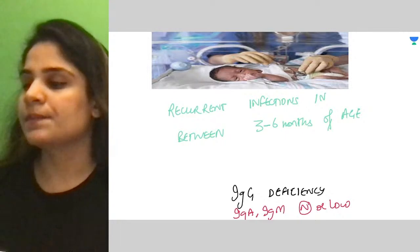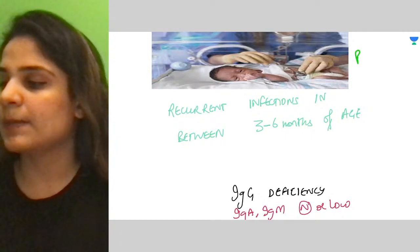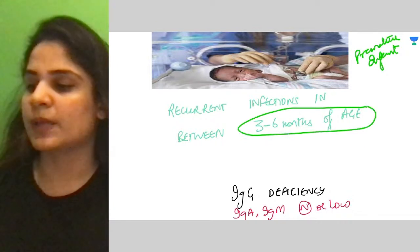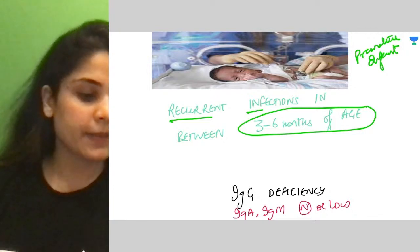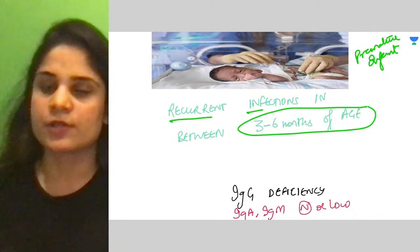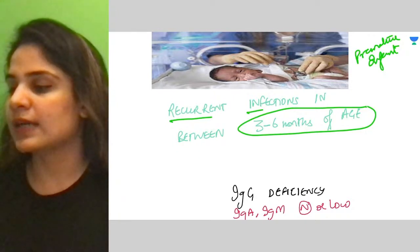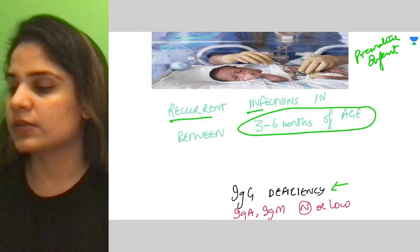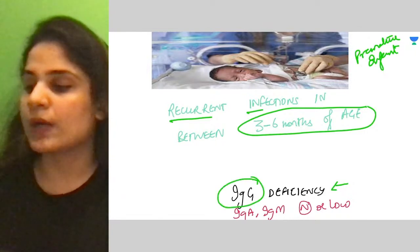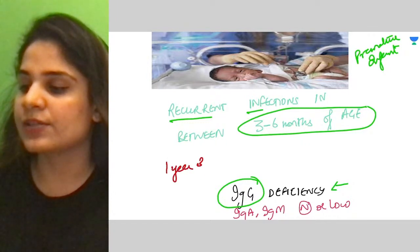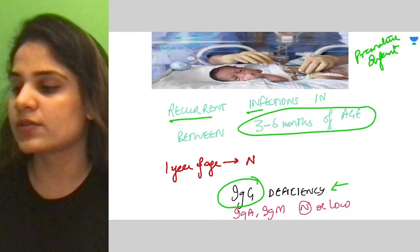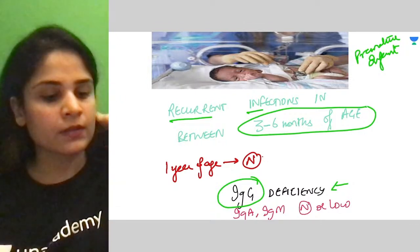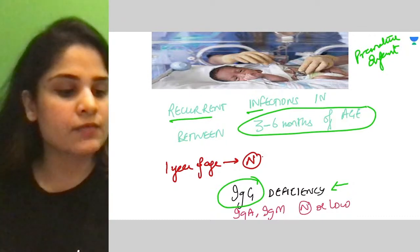Next flashcard: a premature infant starts getting recurrent infections at three to six months of age. On testing, there is IgG deficiency but all other immunoglobulins — IgA, IgM, IgE — are normal. Crucially, by the time the baby reaches one year of age this disease resolves. This is hypogammaglobulinemia — specifically transient hypogammaglobulinemia of infancy.